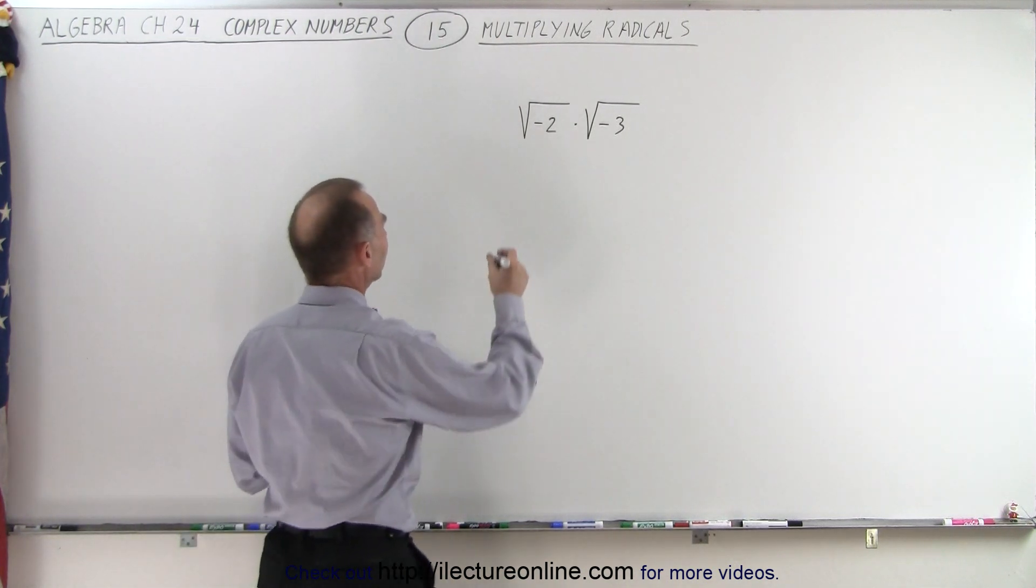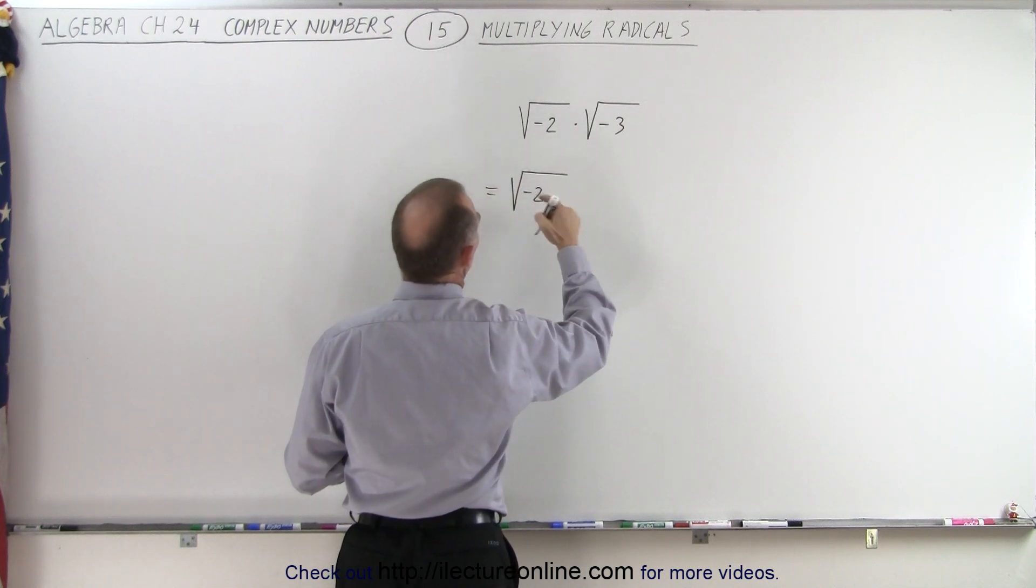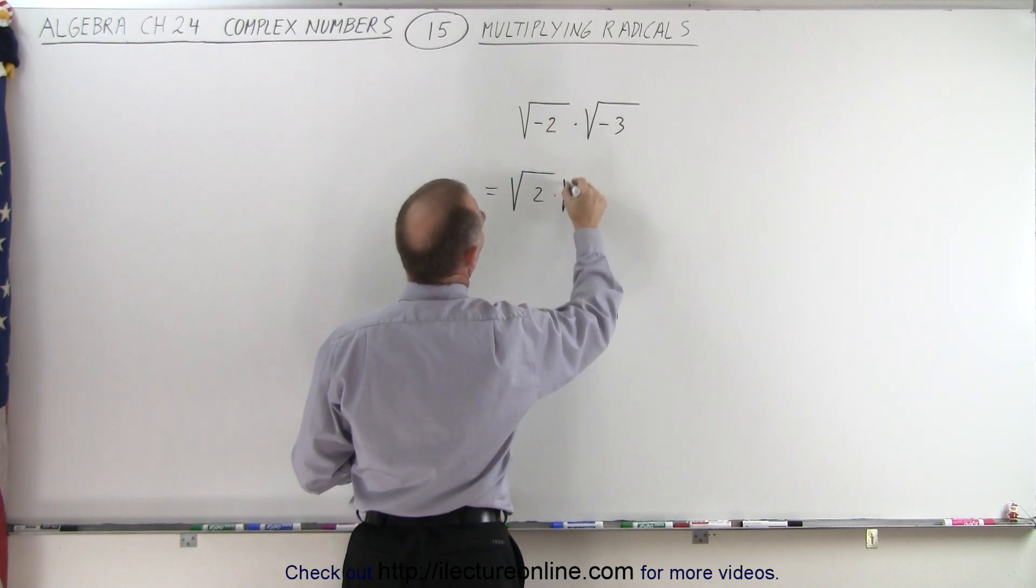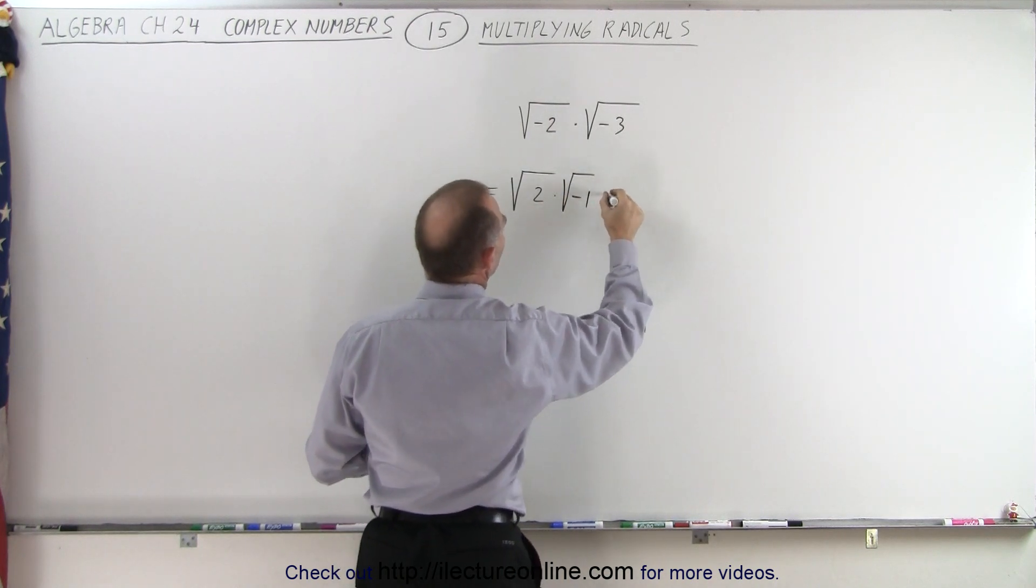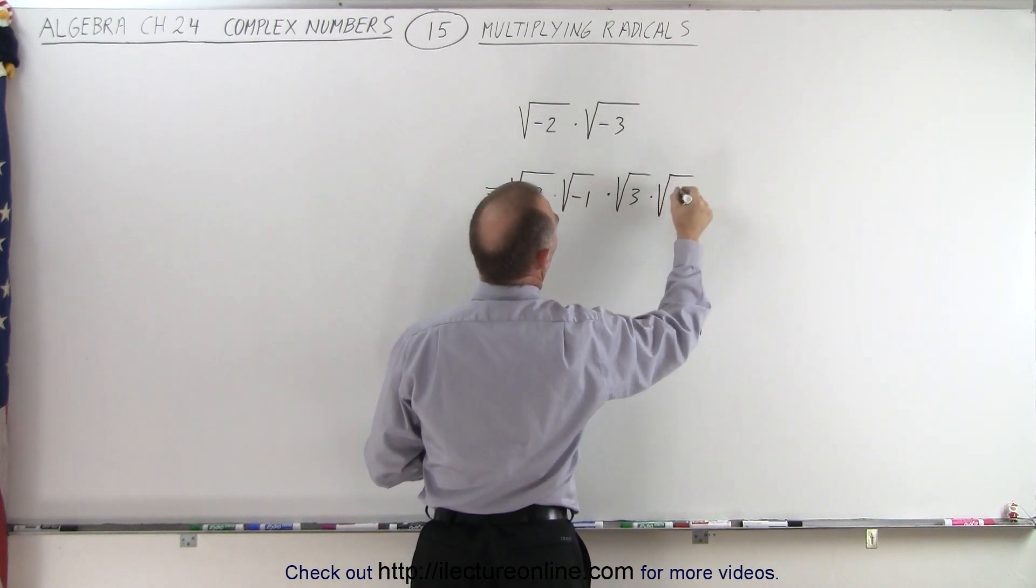So that means this can be written as the square root of negative 2, or I should say the square root of positive 2, times the square root of negative 1, times the square root of 3, times the square root of negative 1.